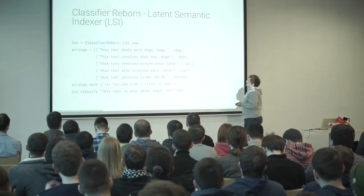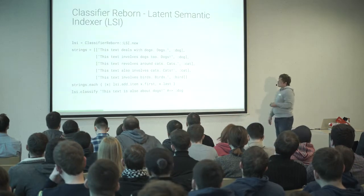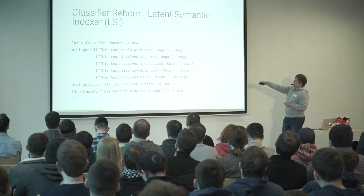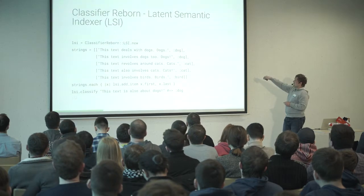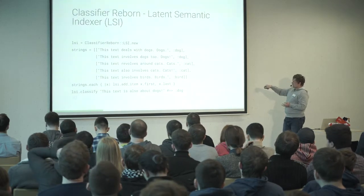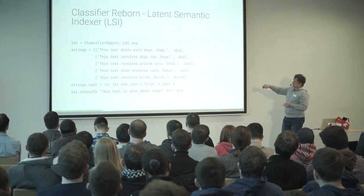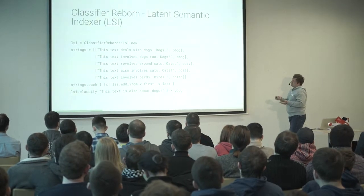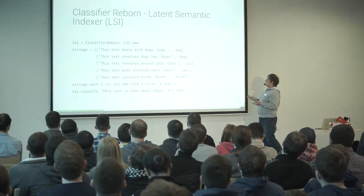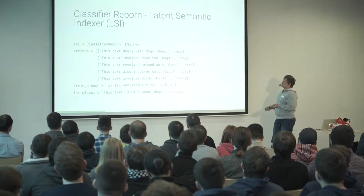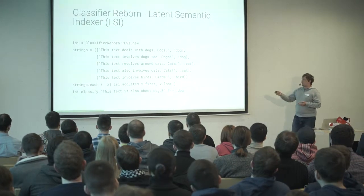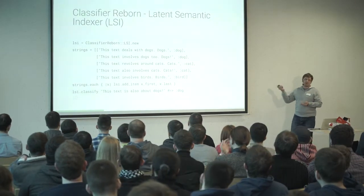Next is LSI — very similar. Again, you provide some information and categories (now in symbols), you teach it, and after that you can classify. It's like asking: 'what category is this information?' And it will provide you some categories. Of course these are very simple examples because there's not much data — as I said, for machine learning you should have a huge amount of data.